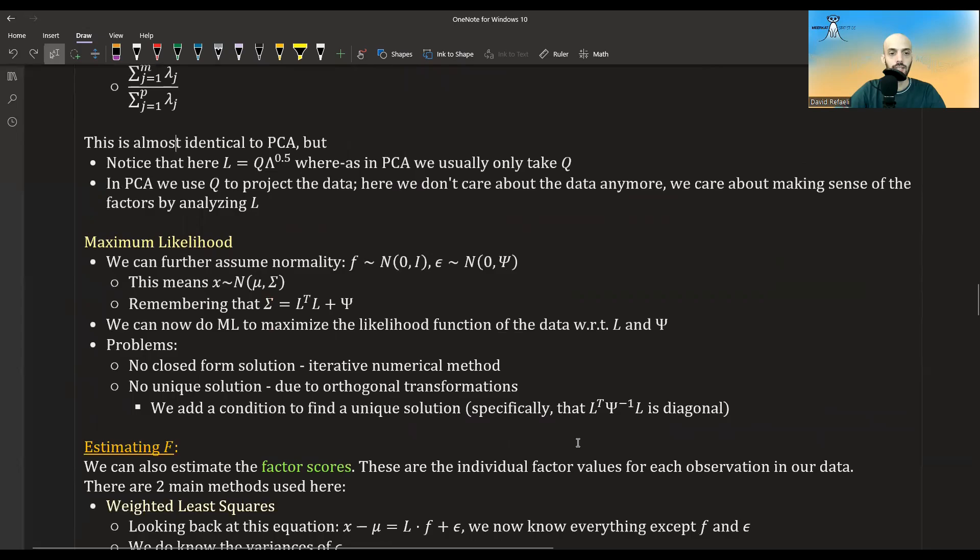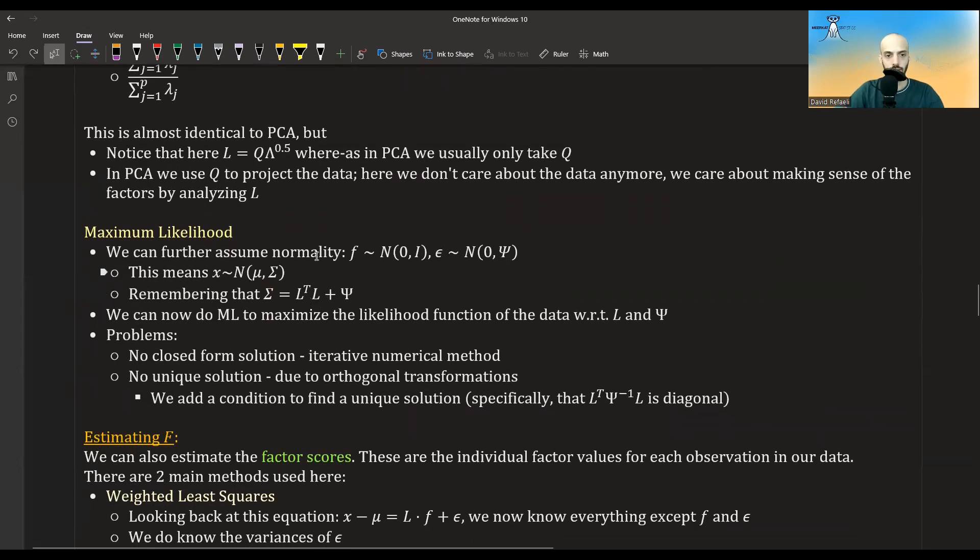Another method is the maximum likelihood method. And here we have to further assume some distribution normality. So we will assume that F distributes normal. We already assume that its mean is zero and that its variance is the identity matrix. And likewise for the epsilon, we'll assume it distributes normal. We already assume that it's mean zero and variance, diagonal variance matrix psi.